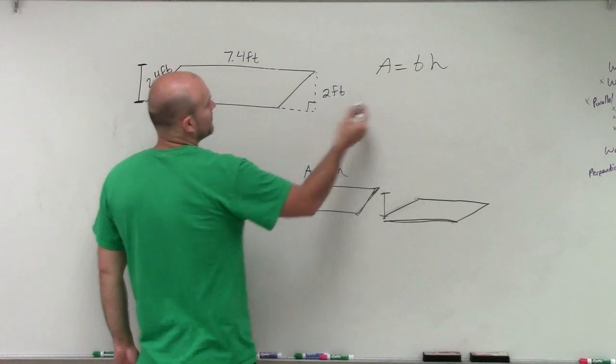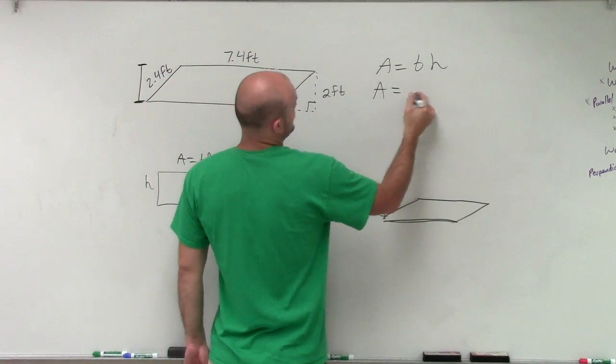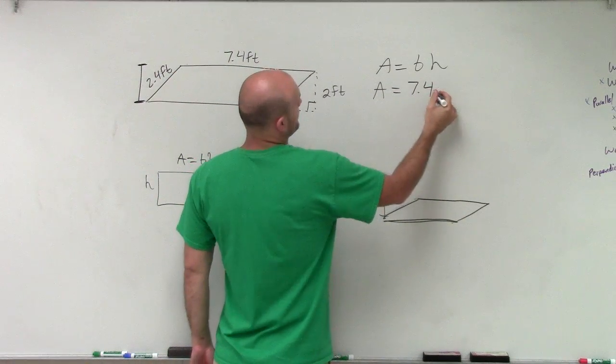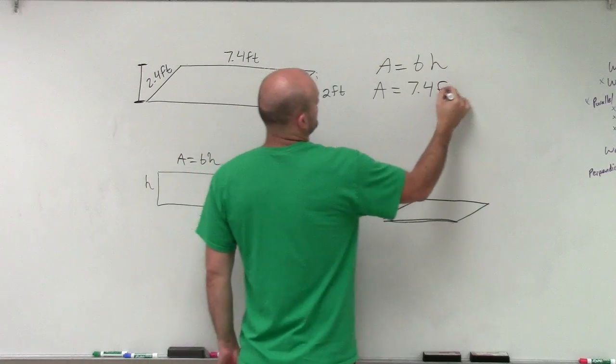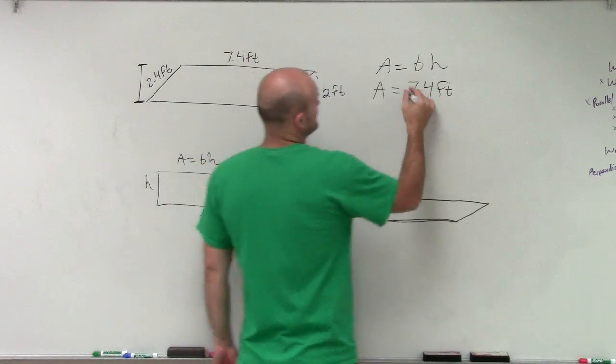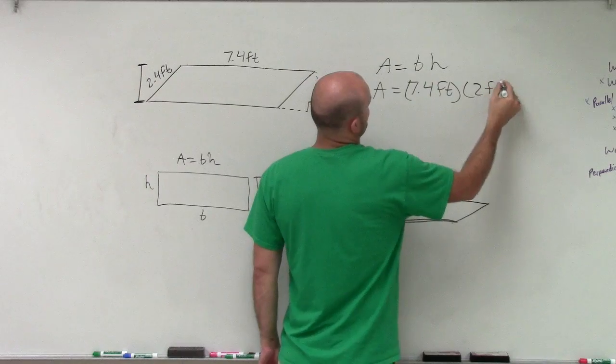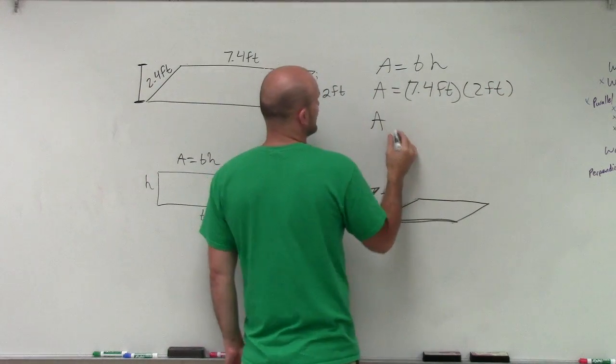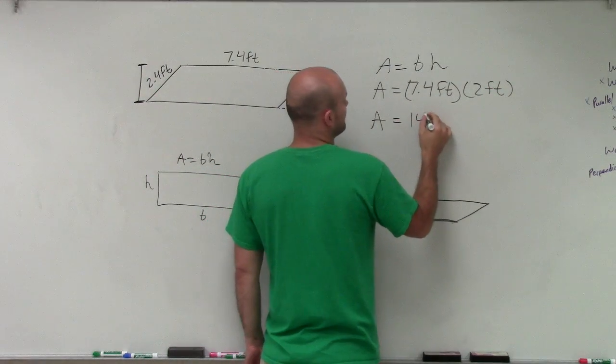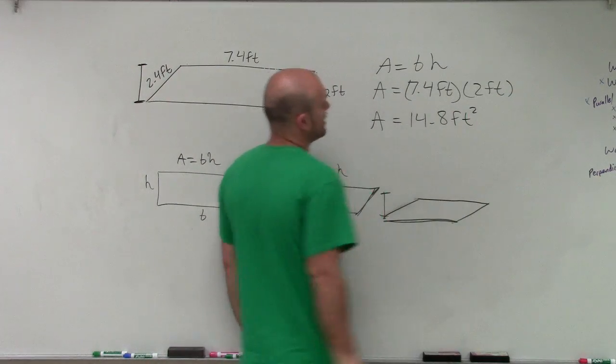So I have my area equals my base, which is 7.4 feet times 2 feet. Therefore, my area of my parallelogram is going to be 14.8 feet squared.